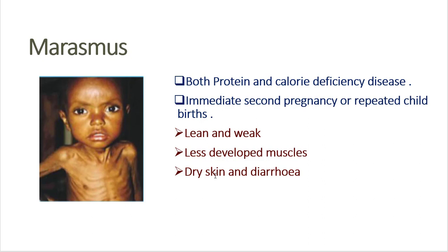What are the symptoms of Marasmus? Lean and weak — observe the image of the kid here. The child has prominent bones; you can count the bones. That much lean. Less developed muscles and dry skin are also symptoms of children suffering with Marasmus disease.